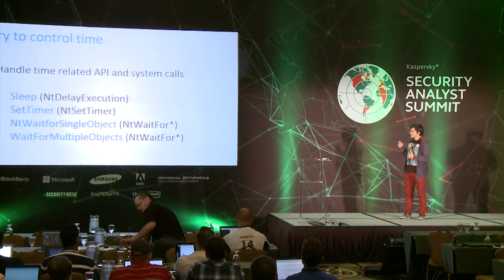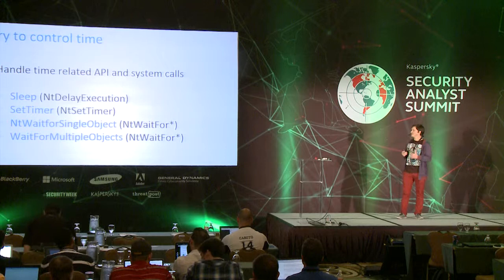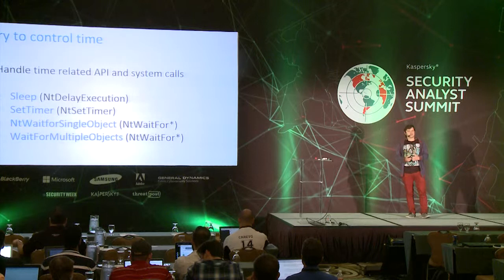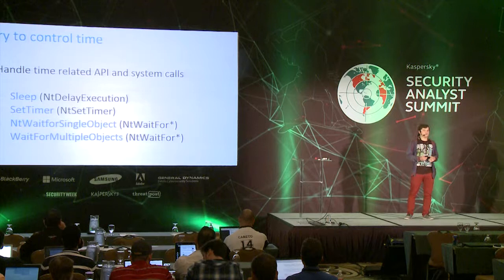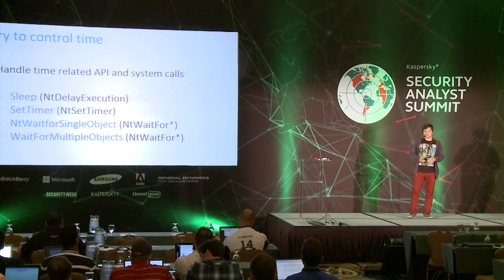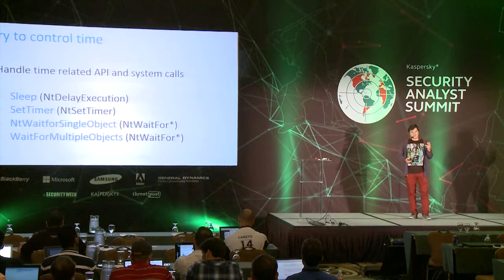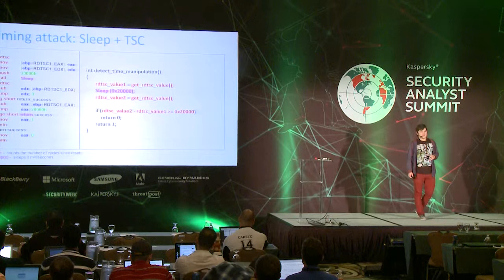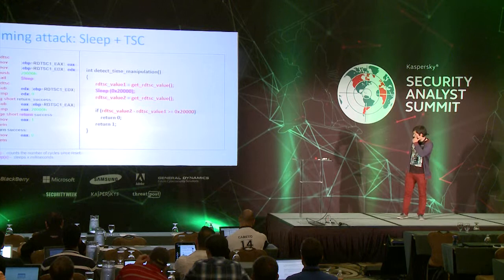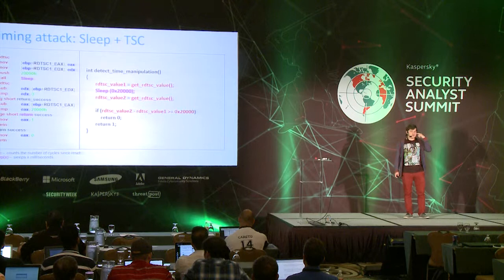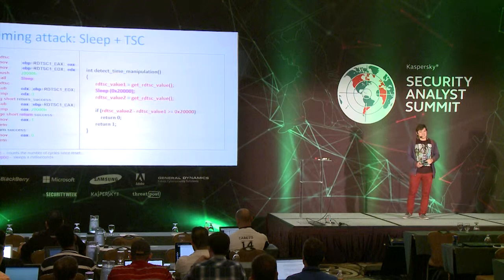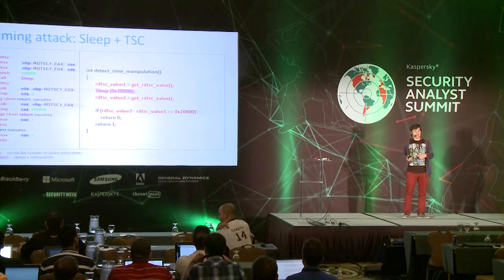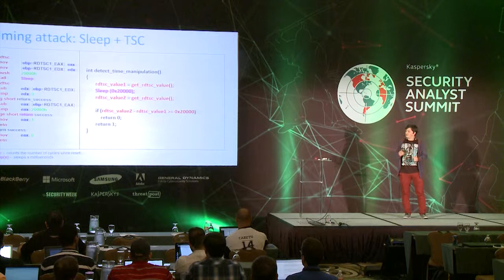When sandboxes try to analyze malware, they handle specific functions — API and system calls responsible for execution delaying. If a sandbox sees that an unknown sample tries to delay execution for longer than it should, it just patches the parameters of that function and lets the sample continue execution. Unfortunately, it doesn't always help. This is a real example — I put some assembler and a pseudo-C implementation. This malware is not just delaying execution, but actually checking if the execution was delayed. It checks the timestamp first, then sleeps, then checks the timestamp a second time, compares the two timestamps, and if the difference is not big enough, the malware assumes the time was manipulated and doesn't execute.